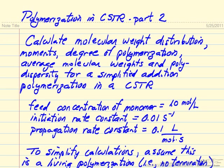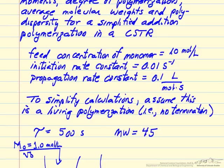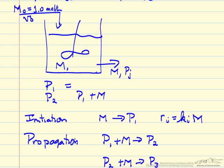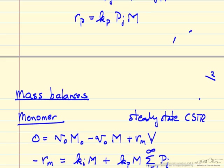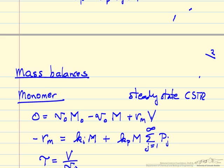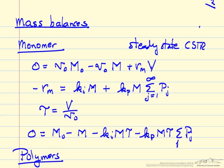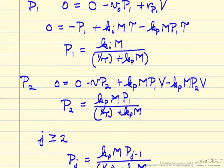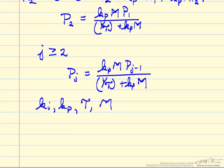In this video we'll continue this problem on polymerization in a CSTR, where in part one we showed how to derive the mass balances. We're doing a balance on a CSTR for a simplified polymerization where there's just initiation and propagation. For steady state conditions we derived mass balances for the monomer, then for each of the polymers, and then we had the general form.